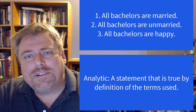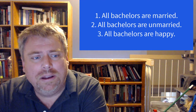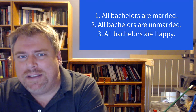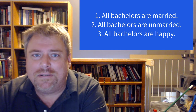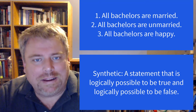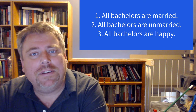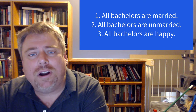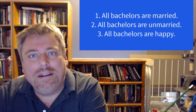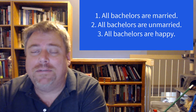Number three: all bachelors are happy. Is that true or false? Notice it's logically possible to be true, but also logically possible to be false. You can imagine all bachelors are happy, but you can also conceive of an unhappy bachelor. So it's neither necessarily true nor necessarily false. If it's logically possible to be true and logically possible to be false, we call it synthetic. So: all bachelors are married is a contradiction — false by definition. All bachelors are unmarried is analytic — true by definition. All bachelors are happy is synthetic — possibly true, possibly false.